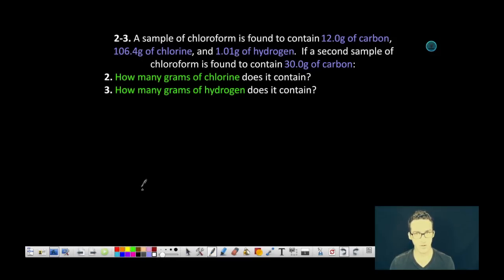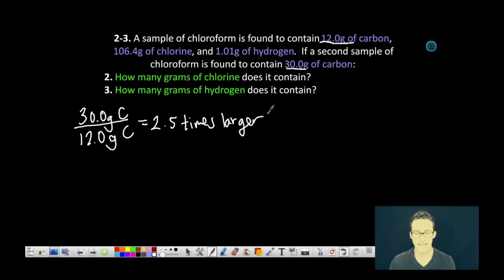let's take a look at the carbon, which is the information that we're provided with originally in both the initial sample and in the second sample. If we compare the amount of 30 grams of carbon to 12 grams of carbon, we get that it's about 2.5 times larger in the second sample than it is in the first sample. What this tells us is due to the law of definite proportions that our masses of chlorine and hydrogen will also be 2.5 times larger in that second sample.